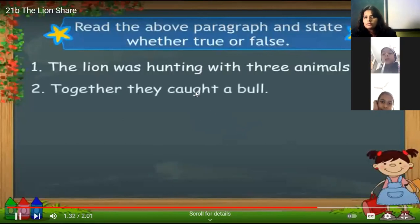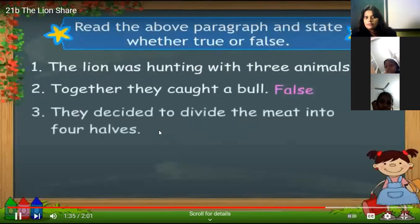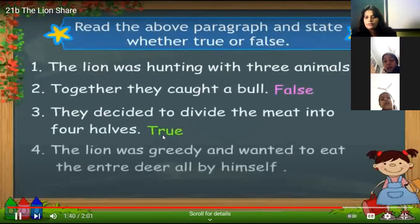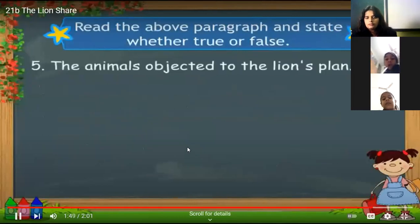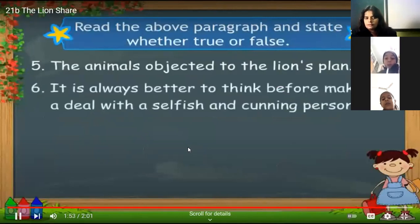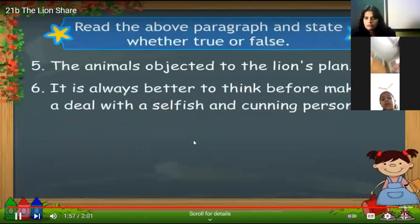Together, they got a bull. No, they have caught a deer, not a bull. False. They decided to divide the meat into four halves. Yes, they decided to divide it into four halves. And wanted to eat the entire meat all by himself. True. The animals objected on the lion's plan. Yes. It is always better to think before making a deal with a selfish and cunning person. True.